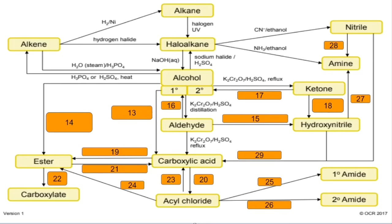Number thirteen: primary alcohol to carboxylic acid — same oxidizing agent but to get the carboxylic acid you'd heat under reflux. Number fourteen: alcohol to ester — you can either use a carboxylic acid with a concentrated sulfuric acid catalyst and heat it, or you can use an acid anhydride.